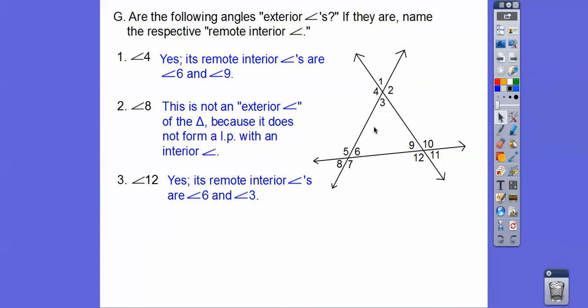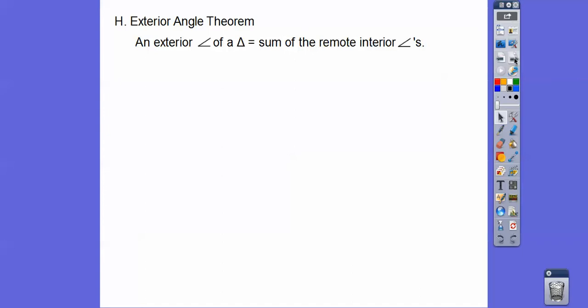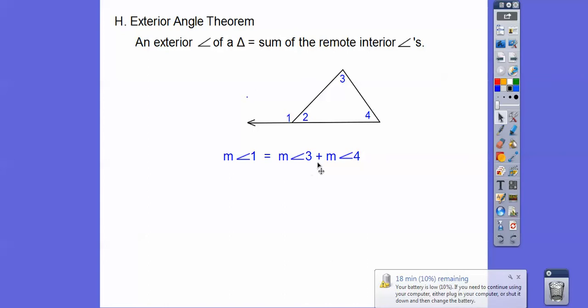This leads us to this theorem. An exterior angle of a triangle equals the sum of their remote interior angles. So this exterior angle equals this one plus this one. The measure of angle 1 equals 3 plus 4.